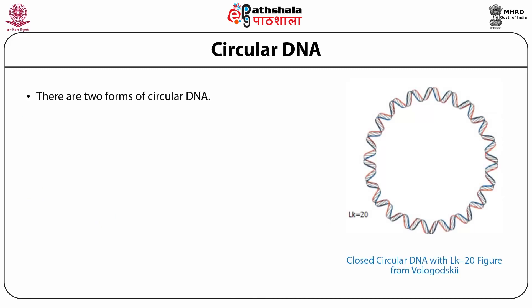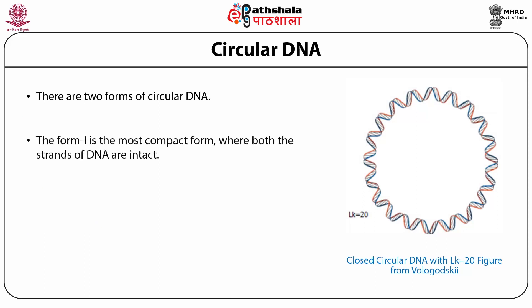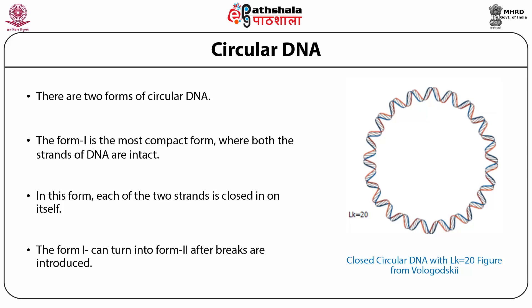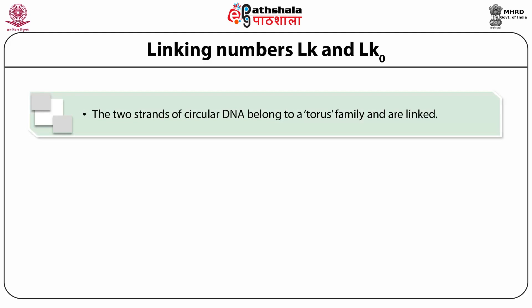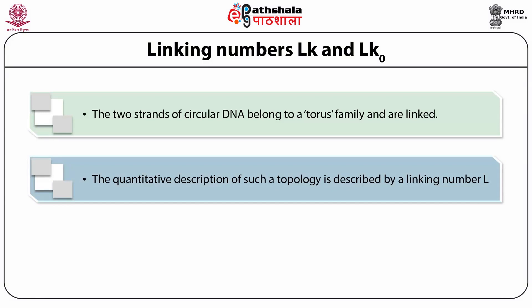There are two forms of circular DNA. Form one is the most compact form where both strands of DNA are intact; each of the two strands is closed in itself. Form one can turn into form two after breaks are introduced. We depict a closed circular DNA with linking number LK equal to 20. There are two linking numbers, LK and LK0. The two strands of circular DNA belong to a torus family and are linked.